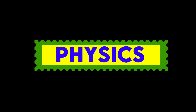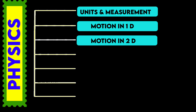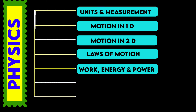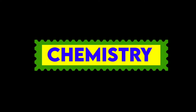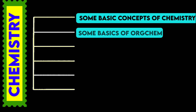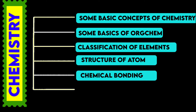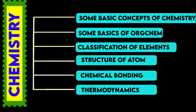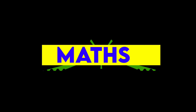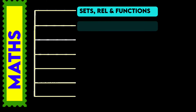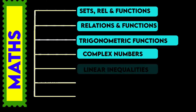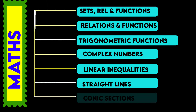1st Physics Syllabus: 1st Chapter Units and Measurements, Motion in a Straight Line, Motion in a Plane, Laws of Motion, Work Energy and Power, System of Particles and Rotational Motion, Gravitation. Chemistry Syllabus: Some Basic Concepts of Chemistry, Some Basic Principles and Techniques of Organic Chemistry, Classification of Elements and Periodicity in Properties, Structure of Atom, Chemical Bonding and Molecular Structure, Thermodynamics. Mathematics Syllabus: Sets, Relations and Functions, Trigonometric Functions, Complex Numbers and Quadratic Equations, Linear Inequalities, Straight Lines.